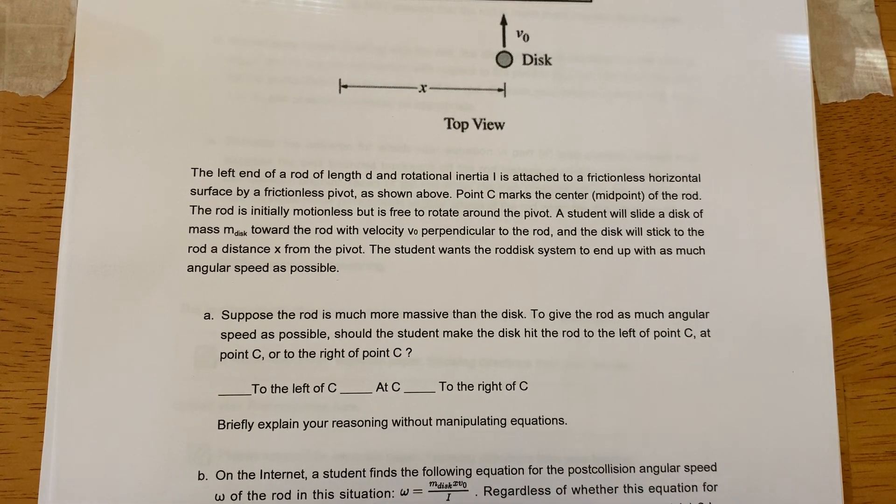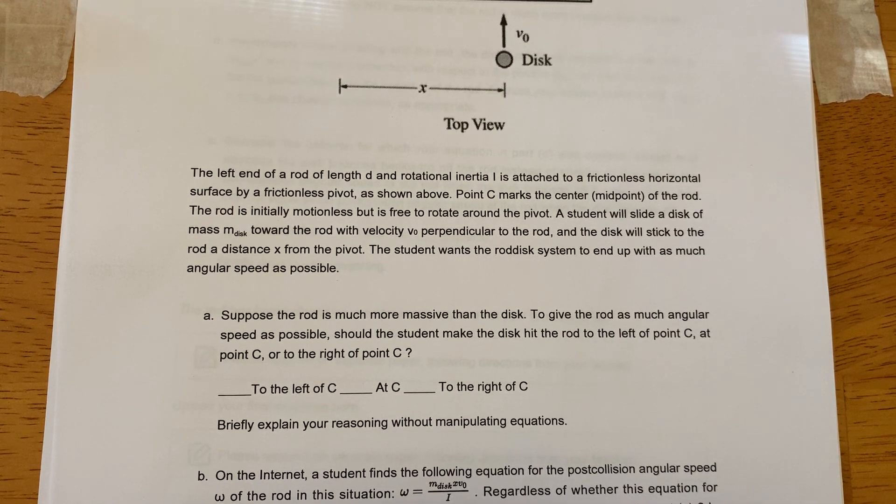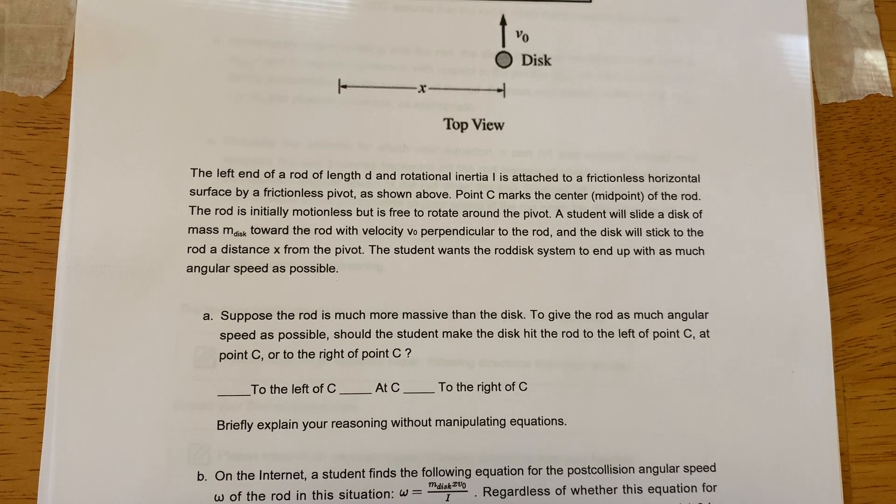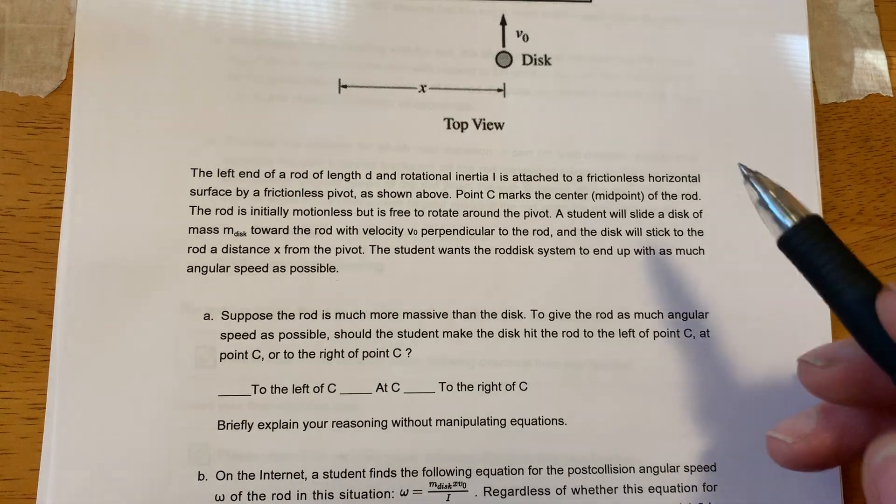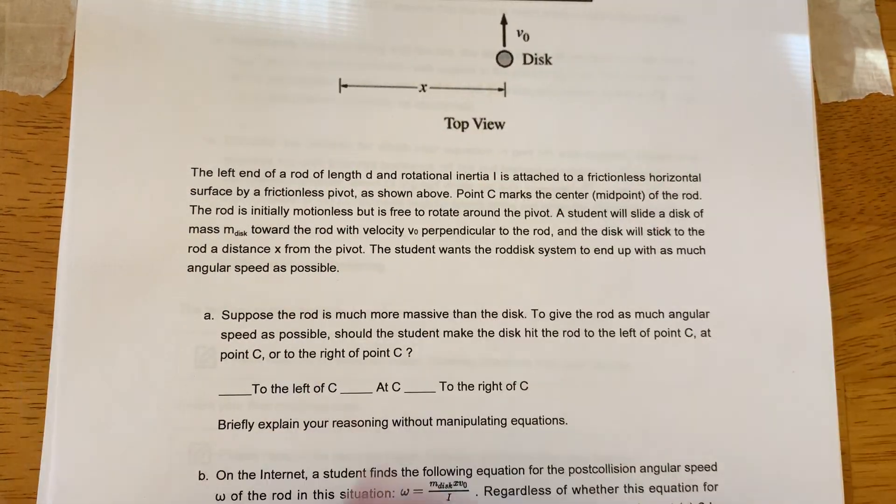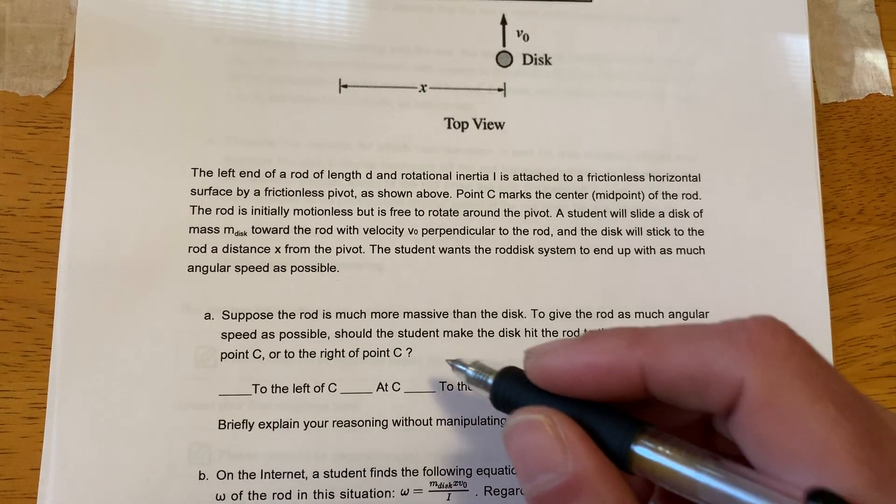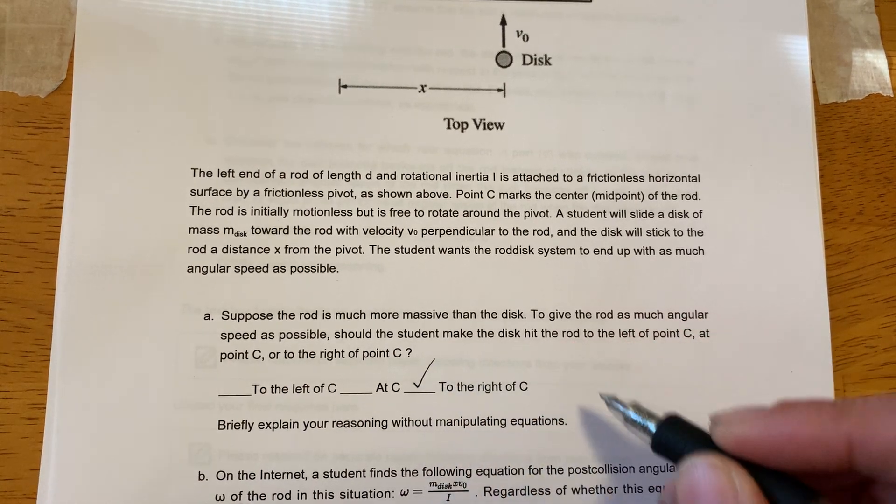The only way to change an object's angular momentum is to apply a force at some distance, which we call a torque. The bigger that torque, the bigger the change in angular speed's gonna be. So I need to get the biggest torque on this, and a torque is a force times a distance, which is gonna cause this guy to pivot around here.